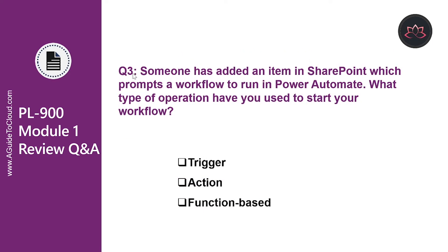Let's look at question number three. Someone has added an item in SharePoint which prompts a workflow to run in Power Automate. What type of operation have you used to start your workflow? Is it function-based? No. Is it an action? Definitely not. The correct answer is trigger. A trigger is an operation that tells a workflow to begin or prompt some type of an action.